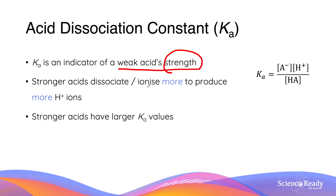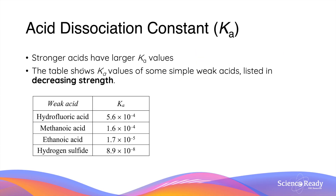Remember that weak acids partially dissociate, but the word partial can mean as little as 1% of acid molecules or as much as 99%. Weak acids that dissociate more will produce more hydrogen ions and hence are described as stronger. Stronger acids therefore have a larger Ka value, as the ratio between the ions and the unionized acid is increased. The table shows just some of the many examples of weak acids, listed in order of decreasing strength. Hydrofluoric acid is the strongest weak acid of the bunch because it has the largest Ka value, whereas hydrogen sulfide is the weakest because it has the smallest Ka value.